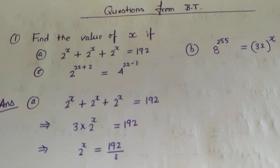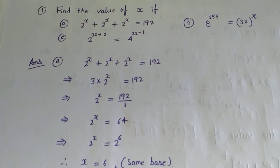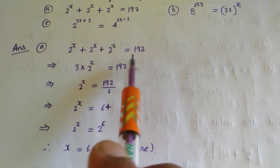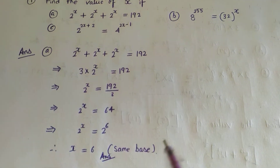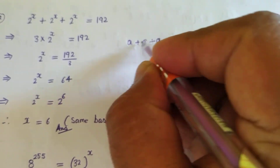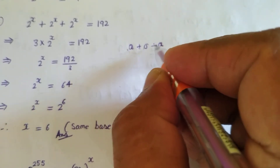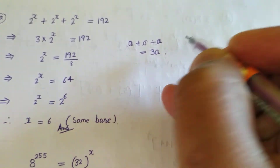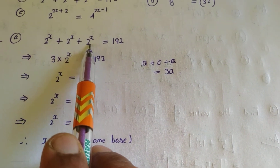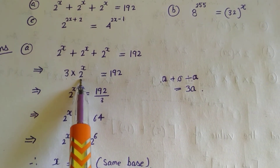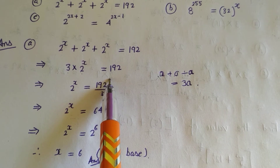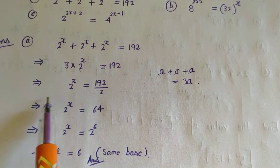For the first question: 2^x + 2^x + 2^x = 192. Notice that a plus a plus a equals 3a. Similarly, 2^x + 2^x + 2^x can be written as 3 times 2^x. So 3 into 2^x is equal to 192, which implies 2^x is equal to 192 divided by 3.